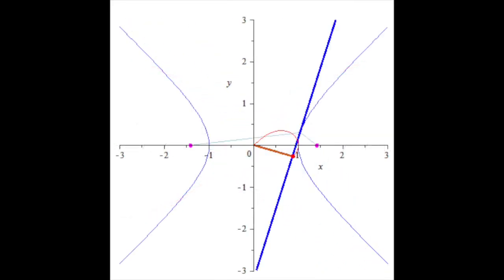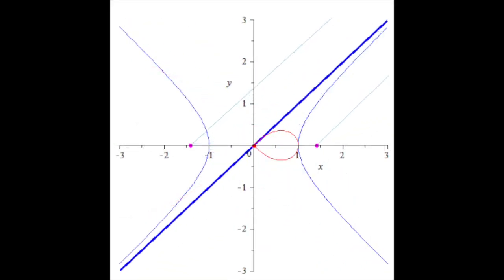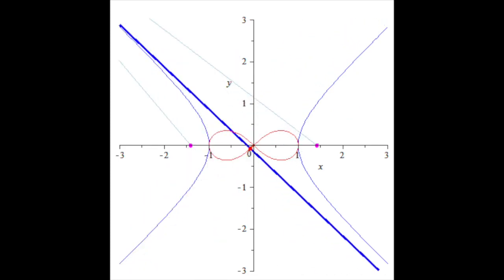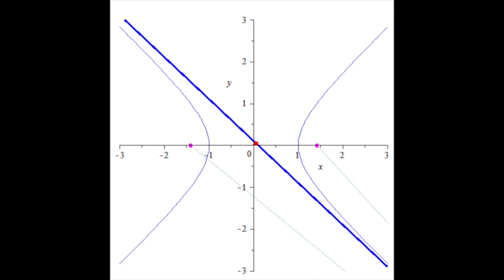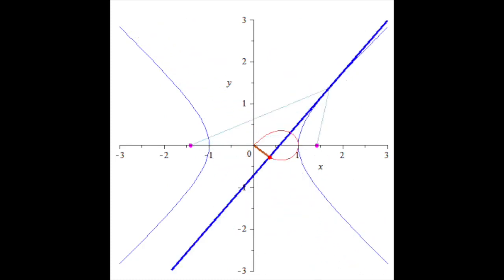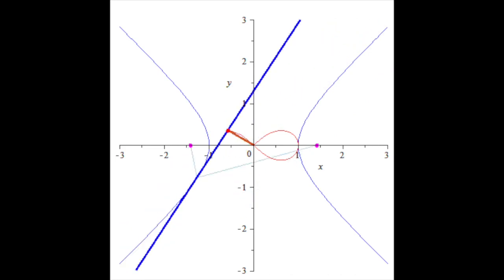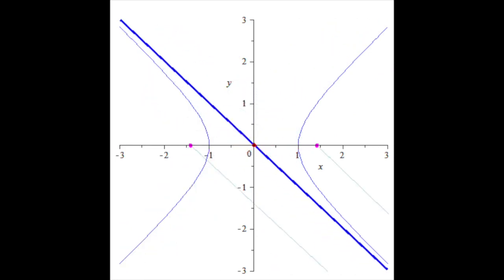There's a relationship between the Lemniscate and the rectangular hyperbola. If a tangent is drawn to the hyperbola, and the perpendicular to the tangent is drawn through the origin, the point where the perpendicular meets the tangent is on the Lemniscate.